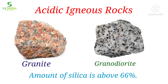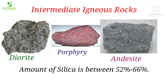Rocks in which the amount of silica is above 66% are called as acidic igneous rocks. Granite and granodiorite are examples of acidic igneous rocks. Rocks in which the amount of silica is between 52% to 66% are called as intermediate igneous rocks. They are not acidic rocks nor basic rocks.